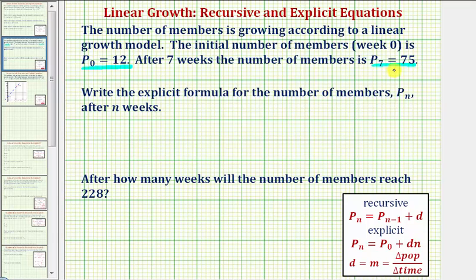We can determine the common difference two ways. We can use this explicit equation here and let P_n equal P₇, which we know is equal to 75. This means we can substitute 75 for P_n, as long as we substitute 7 for n.